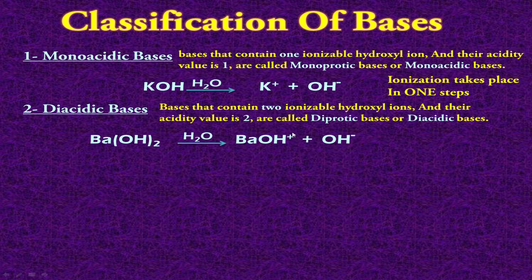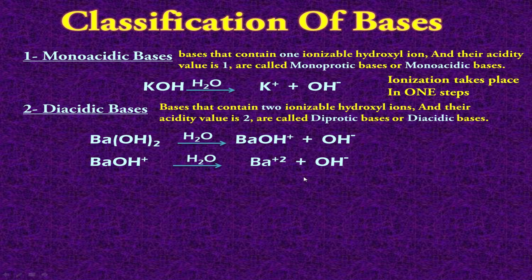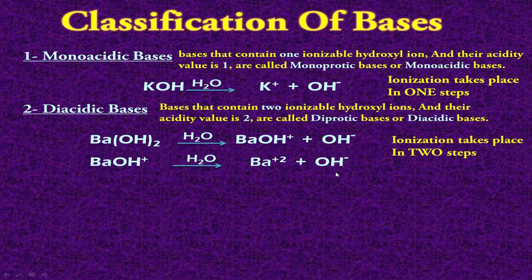The remaining radical will have a plus sign because OH has a minus sign. From this remaining radical, the second OH is removed in the second step, and it converts into barium with a plus 2 charge. After removal of 2 hydroxyl ions, the ionization is complete. So the ionization of such bases takes place in 2 steps, and therefore they are called diacidic bases or diprotic bases.